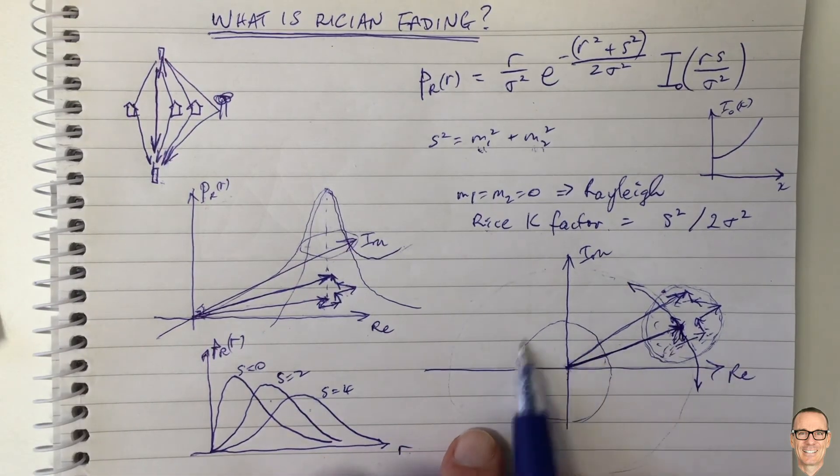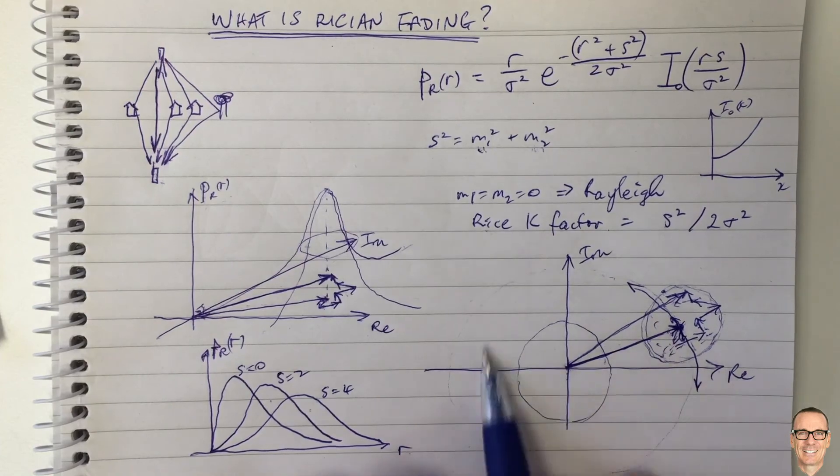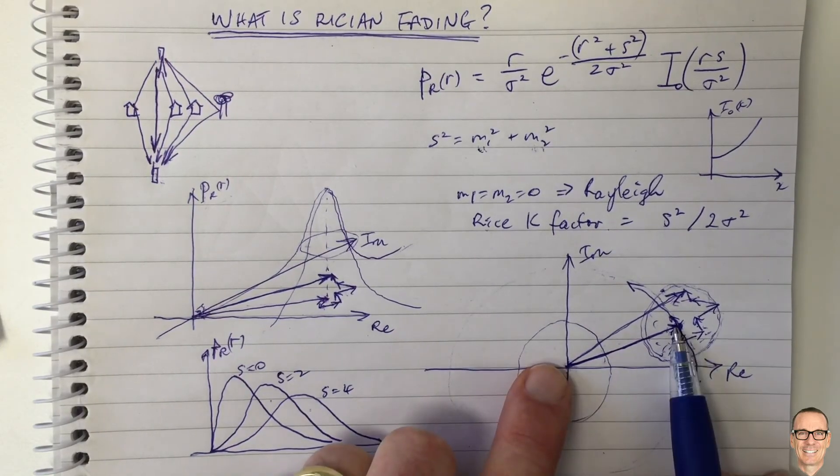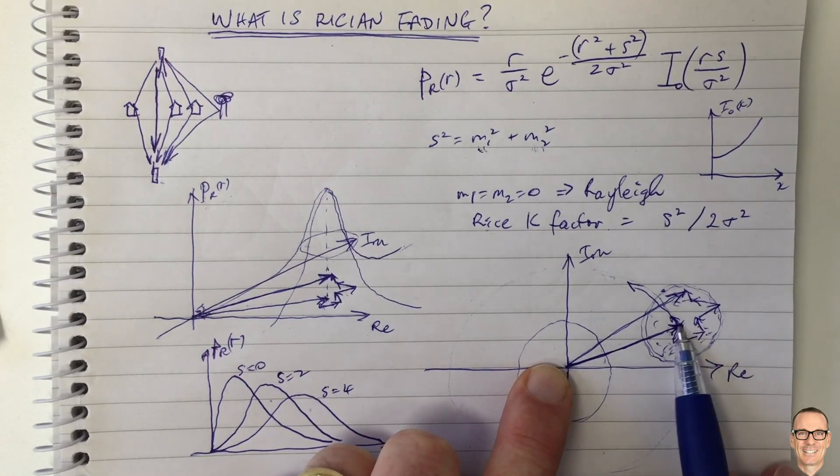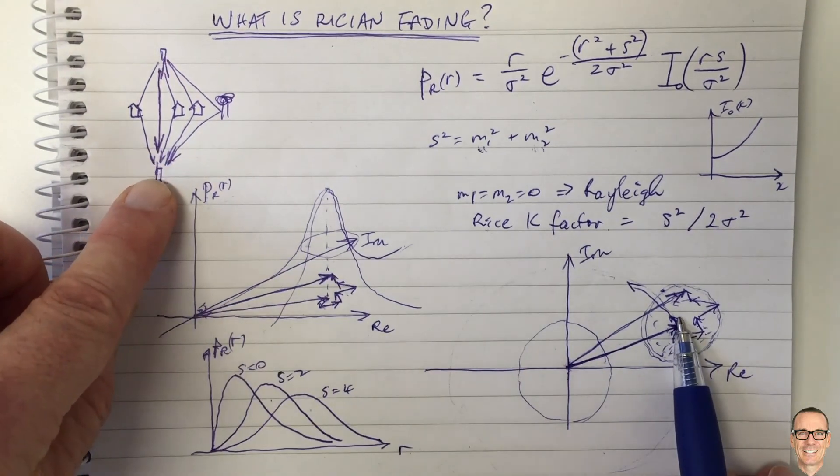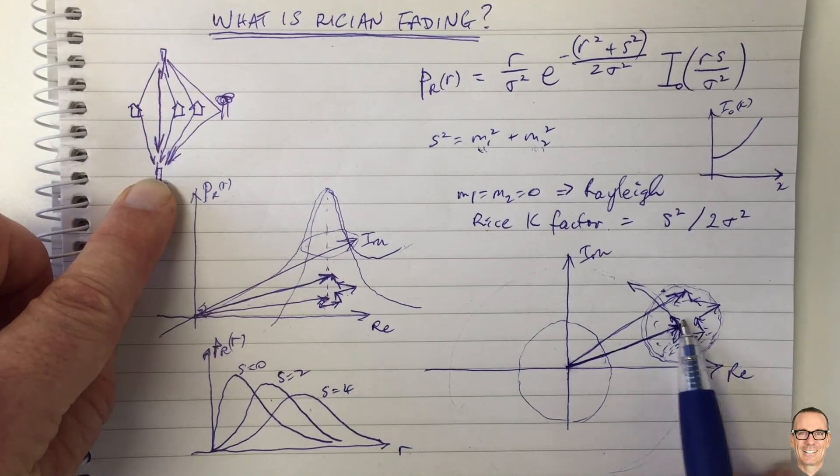overall in time is uniform in all directions, equally likely in all directions. But if you are staying still and just moving small distances around, then it will be located around that dominant value of that line of sight path if that's not changing.